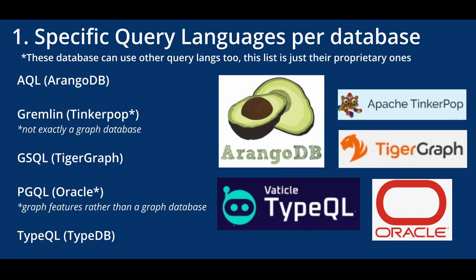Starting out with which graph databases have proprietary query languages. This doesn't mean the more agnostic query languages won't work with these databases, but it does mean these databases are very specifically calibrated to these query languages. It's good to know which ones go with which language, especially if your company is already using a graph database and you want to learn the query language you'll use most in your day job.